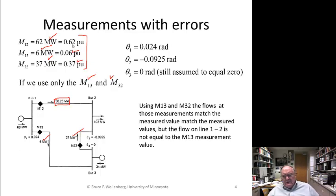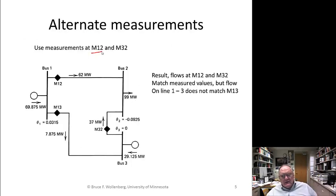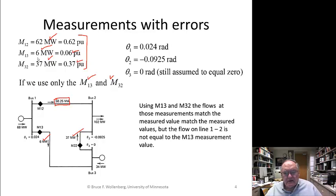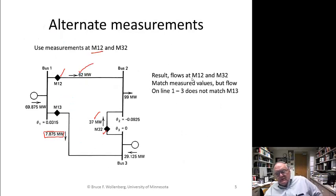Well, that's no good. So you say, okay, let's do it differently. So now I'm going to use M one-two, and use this one, and M three-two. I'm going to do that. So now I match the 62. I match the 37. Oh, boy. And what I get over here is 7.875. It doesn't match the six. Remember, I got a measurement up there of six on that M one-three bus. So I can't reconcile this. I've got three measurements, and I only need to estimate two states. And I can't do it by just picking two of the measurements and letting it solve. And then looking back at the third measurement, it comes out quite wrong.